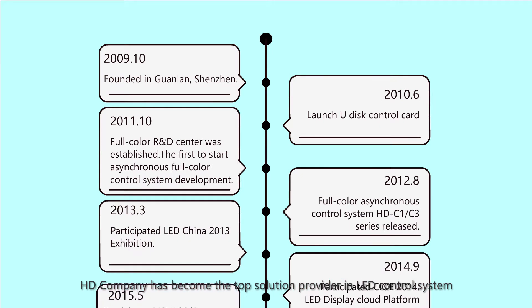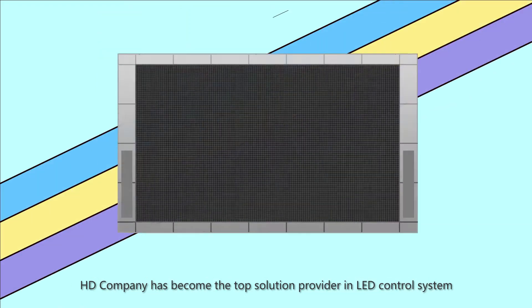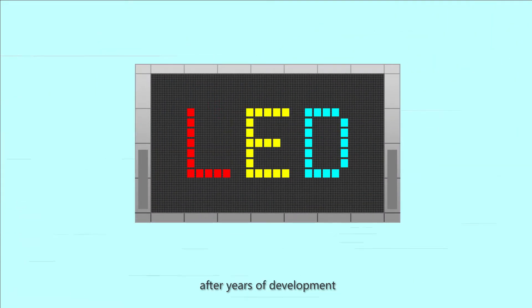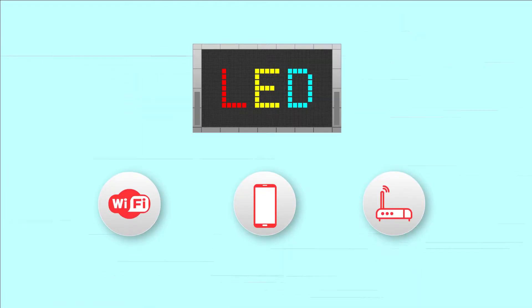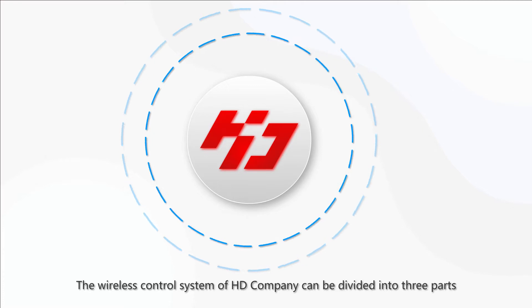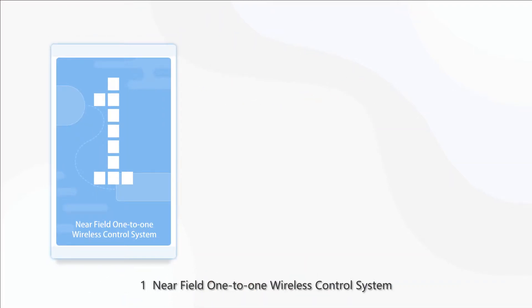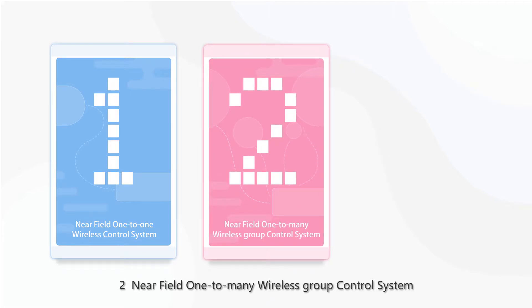HD Company has become the top solution provider in LED control systems after years of development. Now, we are going to present you with our wireless control system. The wireless control system of HD Company can be divided into three parts: Near Field 1-to-1 Wireless Control System, Near Field 1-to-Many Wireless Group Control System, and Remote Many-to-Many Wireless Control System.